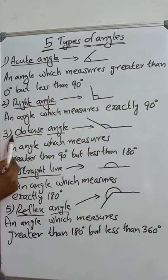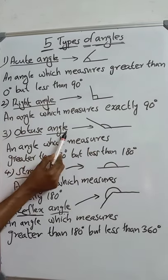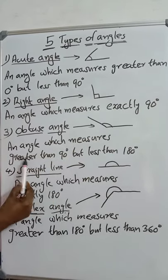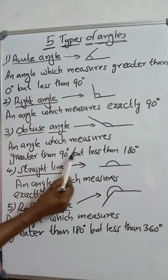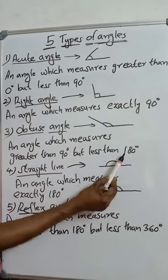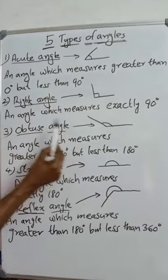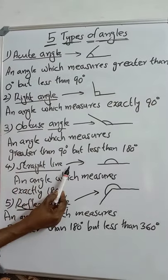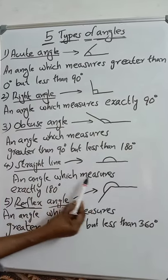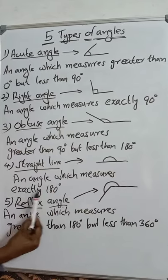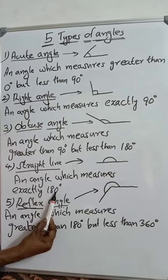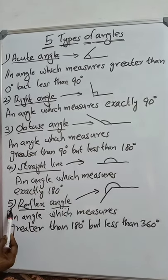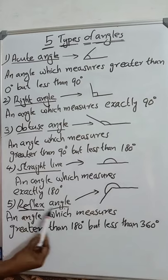Number three: obtuse angle — an angle which measures greater than 90 degrees but less than 180 degrees is called an obtuse angle. Number four: straight angle — an angle which measures exactly 180 degrees is called a straight angle.